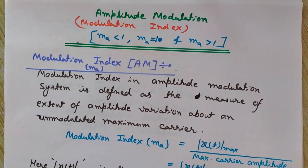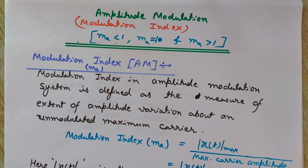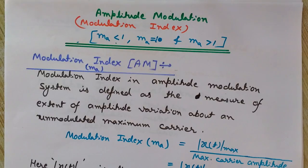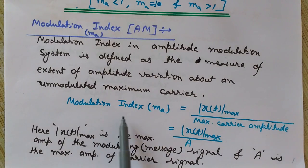If the modulation index is very high, that is greater than one, then it is called over-modulation. In this case, we will not be able to preserve the modulating signal recovered from the envelope of the modulated wave. So to preserve the modulating signal from the envelope of the modulated wave, we need the modulation index to be less than or equal to one — it should not be more than one.